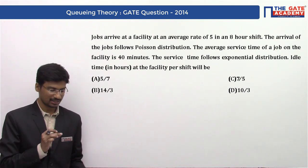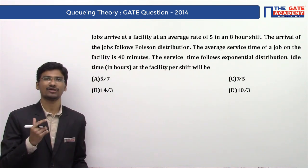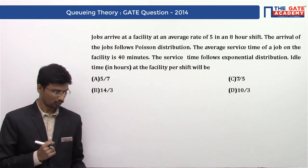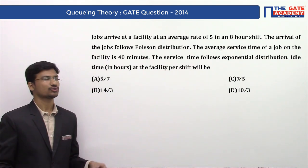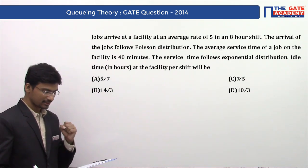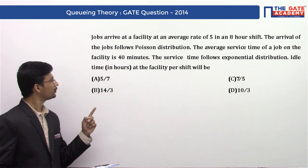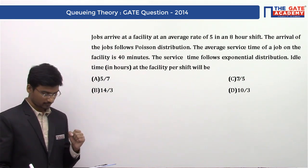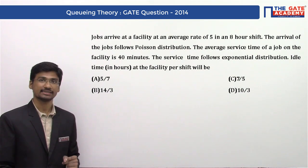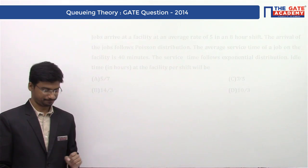The idle time in hours at the facility per shift will be. The options are: option A 5/7, option B 14/3, option C 7/5, and option D 10/3.